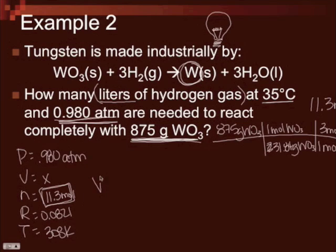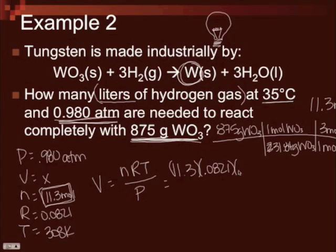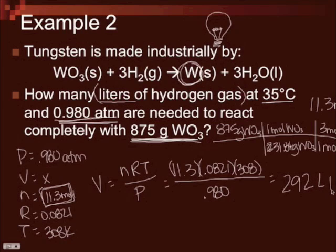So now I can use PV=nRT, rearrange for volume. nRT over P. n is 11.3. If you need to refresh your memory on how to rearrange these equations, then go back and watch the 11.2 notes, because I'll show you how to do that there. You plug all this in, and you get 11.3 times 0.0821 times 308, divided by 0.98, equals 292. And this is liters of hydrogen.